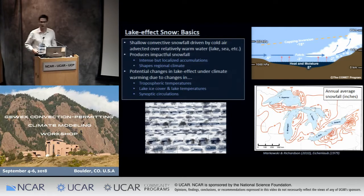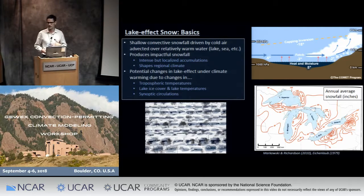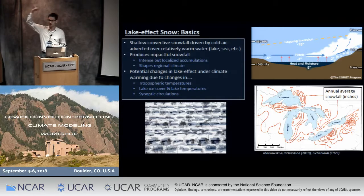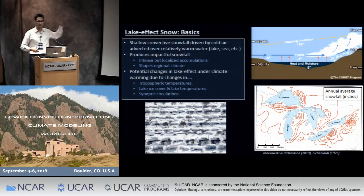The snowfall can be very impactful because it can be very intense. Here's a photo from a lake effect snowstorm near the city of Buffalo off of Lake Erie back in 2014, where over the course of a few days they received over two meters of snowfall. Ten people lost their lives as a result, roofs collapsed, highways were closed.